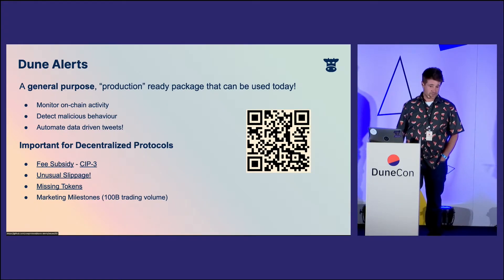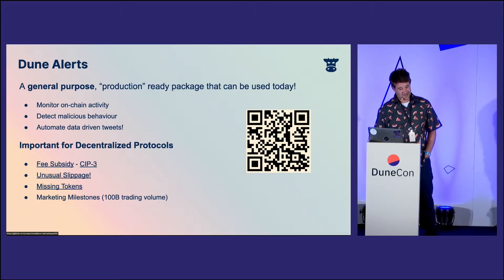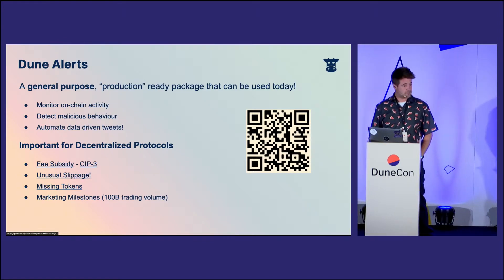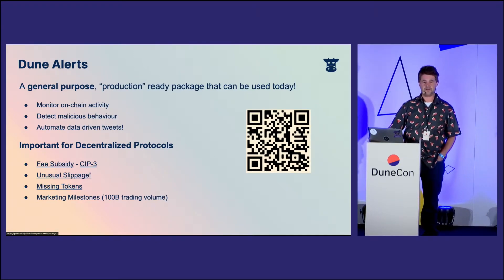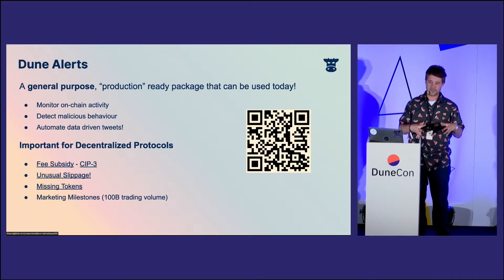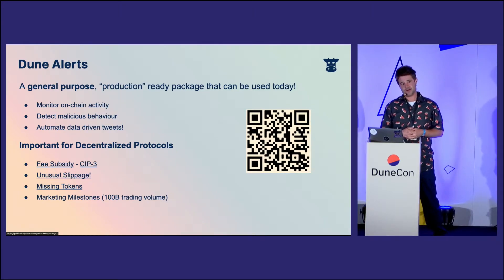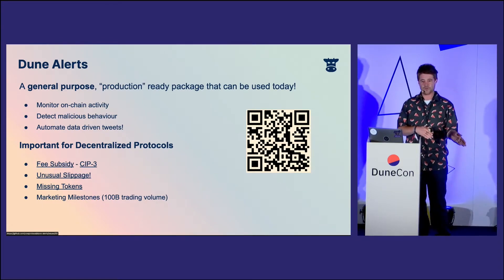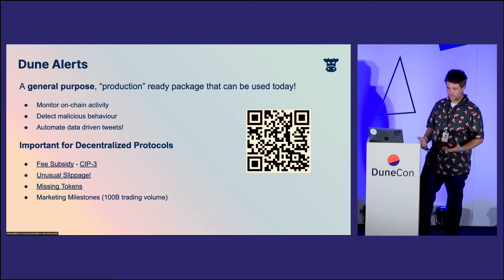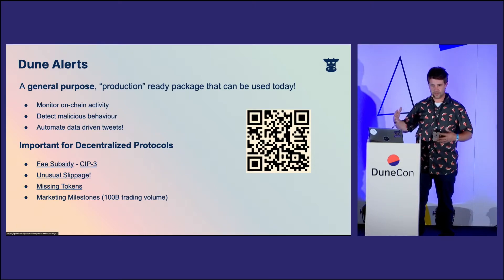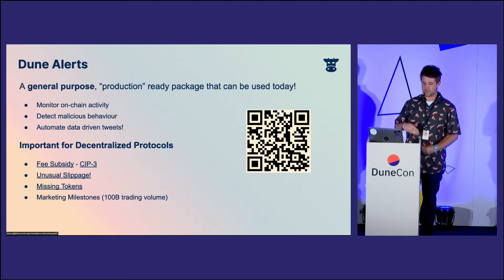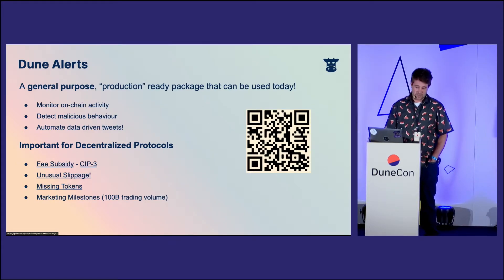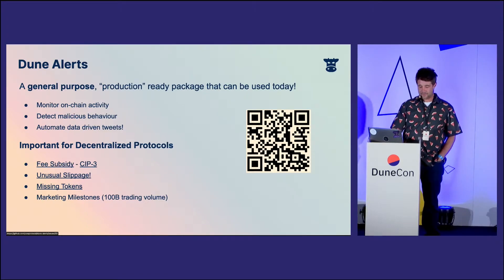Dune Alerts is a general purpose, production-ready package that can be used today. Any of you can use it and it's super easy to use — monitoring on-chain activity, detecting malicious behavior, automating data-driven tweets. I think it's pretty important for decentralized protocols such as ours, especially with the scalability issues we see today in Ethereum — we can't really put all of the rules of the game directly into the smart contract, because it's too gas-intensive to verify. A lot of people in the Ethereum community have moved more towards DAO-based ruling systems. The solvers on our protocol could act in a way that is not according to the rules they are contractually bound to, but the smart contract itself can't do anything about it. So we need to detect these types of malicious behavior and be alerted when it's happening.